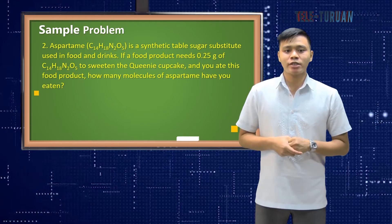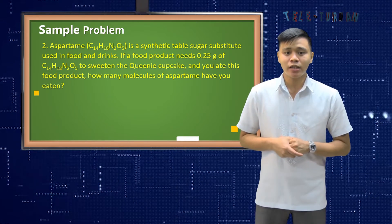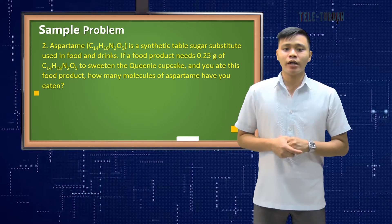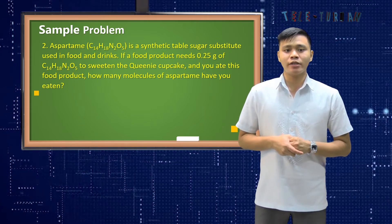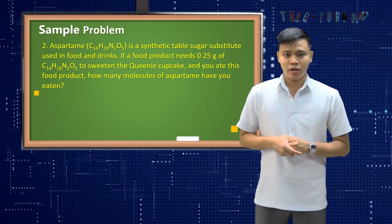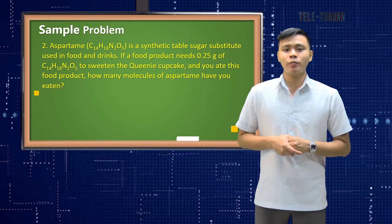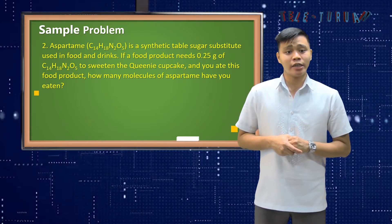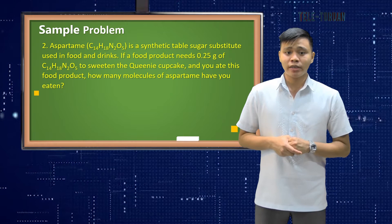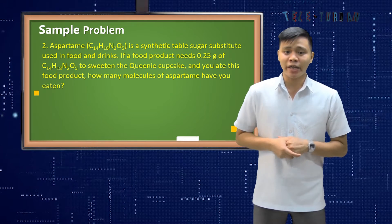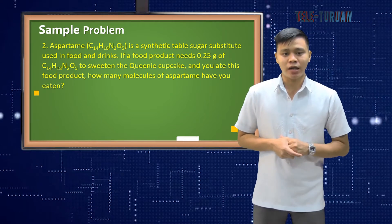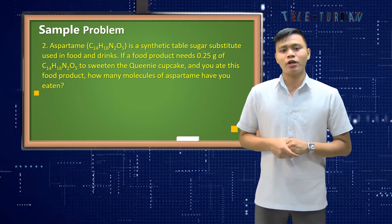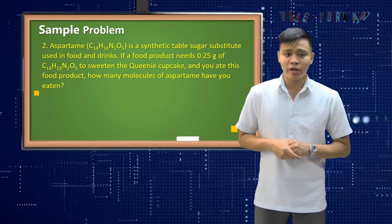Let's try number two. Aspartame, or C14H18N2O5, is a synthetic table sugar substitute used in food and drinks. If a food product needs 0.25 grams of C14H18N2O5 to sweeten a queenie cupcake and you ate this food product, how many molecules of aspartame have you eaten?